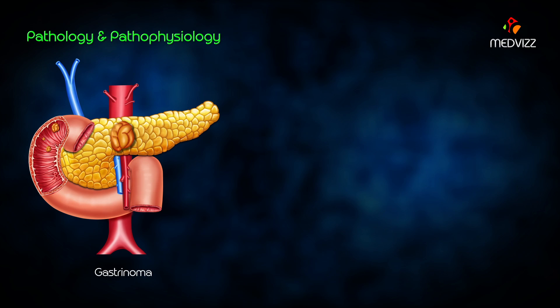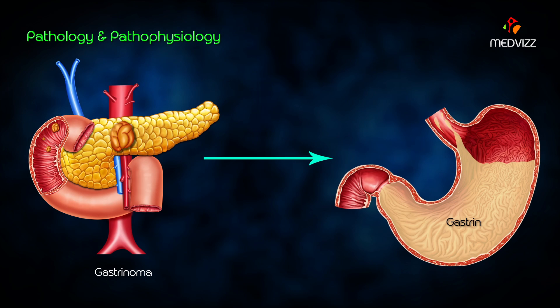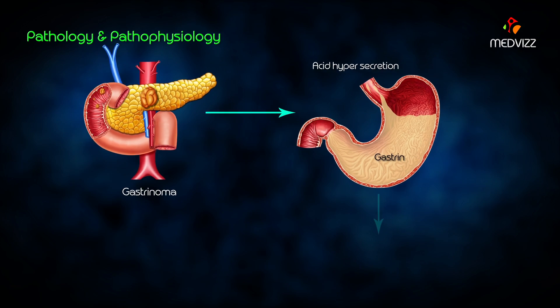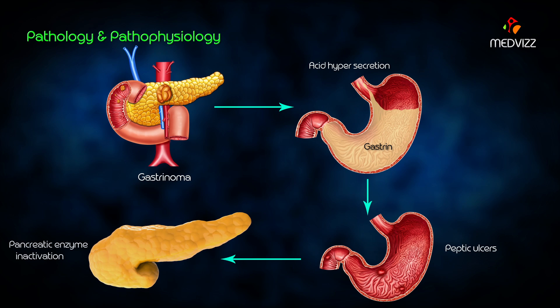The pathology and pathophysiology of ZES: gastrinomas secrete gastrin, which causes acid hypersecretion, which finally causes peptic ulcers and also pancreatic enzyme inactivation.